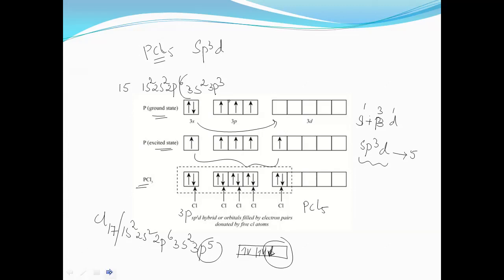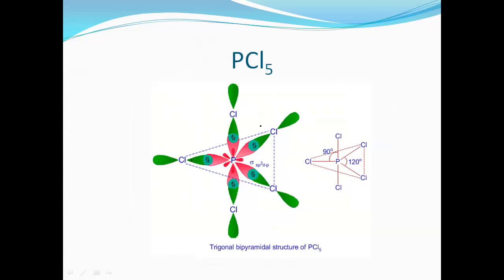Looking at the geometrical structure of PCl5, the central phosphorus atom undergoes sp3d hybridization, forming five sp3d hybrid orbitals that overlap with the 3p orbitals of the five chlorine atoms. This results in a trigonal bipyramidal geometry, with three chlorines arranged in a trigonal planar manner and two chlorines above and below the plane to minimize repulsion.